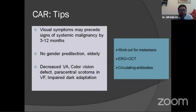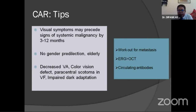A few tips for CAR: visual symptoms may precede the signs of systemic malignancy by 3 to 12 months. There is no gender predilection; it is seen more commonly in the elderly. Features include decreased visual acuity, color vision defect, paracentral scotoma in the visual field, and impaired dark adaptation. A complete workup for metastasis is very important. ERG may have an advantageous role over OCT in detecting early changes. Circulating antibodies such as anti-enolase and anti-recoverin can be important findings.